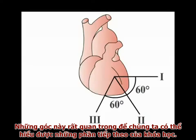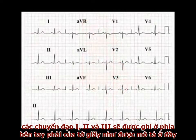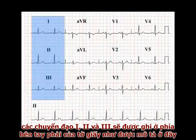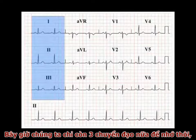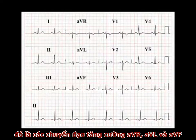These angles will become important in the next section of this course. The readout from the standard leads — leads 1, 2, and 3 — are recorded down the right-hand side of the ECG paper as shown here. We are now left with three further vertical leads to remember: the augmented leads, AVR, AVL, and AVF.